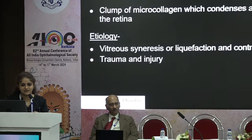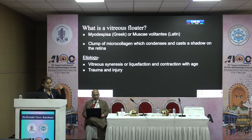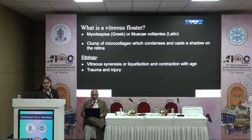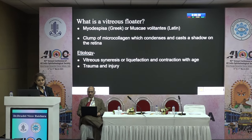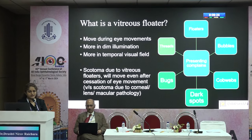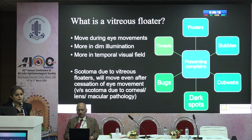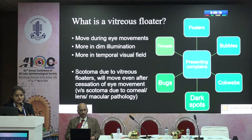Good afternoon. Thank you Dr. Paritosh sir for this opportunity. A vitreous floater — known as myodesopsia in Greek or muscae volitantes in Latin — is a clump of microcollagen that condenses and casts a shadow on the retina, which the patient sees in the visual field. It can occur due to vitreous syneresis, liquefaction, and contraction with age, or due to trauma. The patient presents with floaters, bubbles, cobwebs, dark spots, bugs or thread-like lights floating in the visual field that move with eye movement.